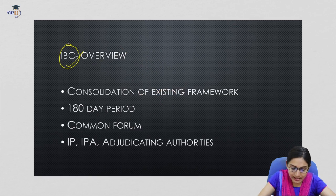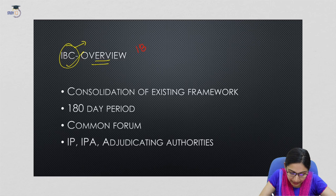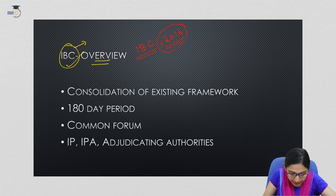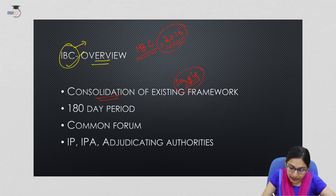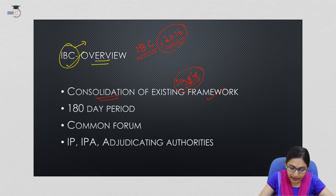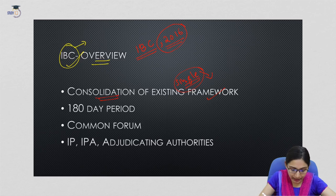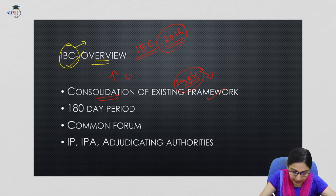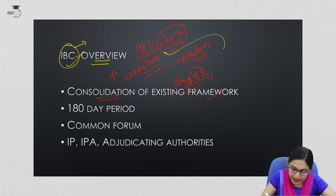The Insolvency and Bankruptcy Code was adopted in 2016. This code consolidates the existing framework by creating a single law for insolvency and bankruptcy in India. When a default in the repayment of loans occurs, the creditors can gain control over the assets of the debtors.